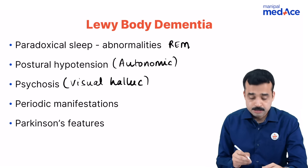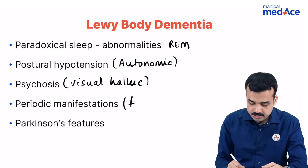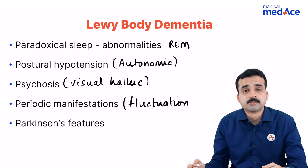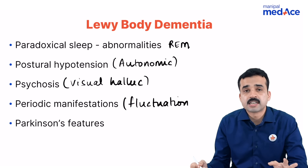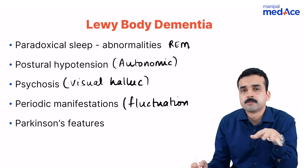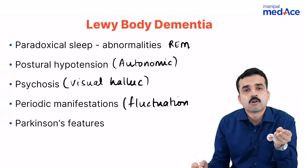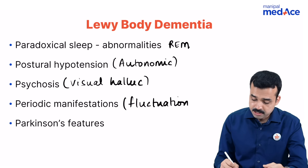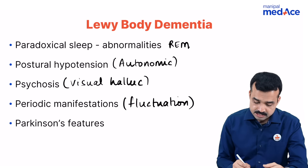The fourth P is periodic manifestation, which represents a fluctuation in the course of symptoms. Unlike most dementias where there is no fluctuation — fluctuation being more often a feature of delirium — Lewy body dementia is one exception where there is a lot of fluctuation in the clinical manifestations.